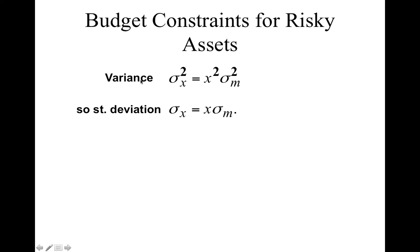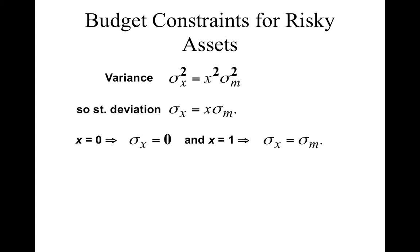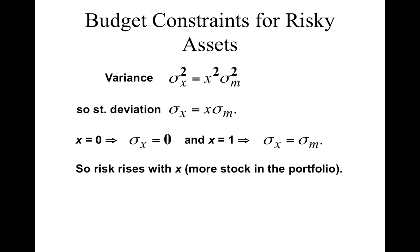Standard deviation is the square root of variance, so you can write the portfolio's standard deviation accordingly. Simple applications: if x equals 0, there is no variation in the average rate of return — you just get the risk-free rate. If x equals 1, putting all money in the stock, your standard deviation is simply the standard deviation of the stock's mean rate of return. So risk rises with x: the more stock in your portfolio, the higher the risk.